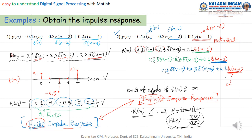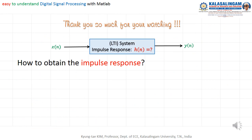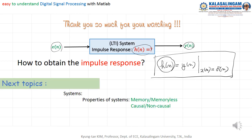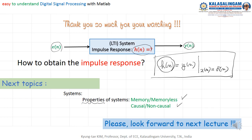Today, thank you very much for watching. I explained how to obtain the impulse response — h(n) is the output y(n) when x(n) equals δ(n). From this we can find y(n). Next topic: let me explain the properties of systems — memory or memoryless, causal and non-causal systems. Please look forward to the next lecture. Thank you very much.